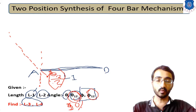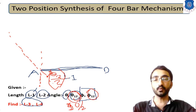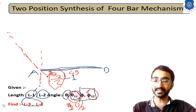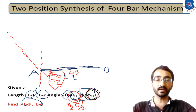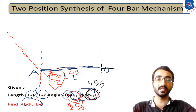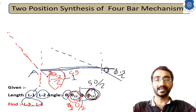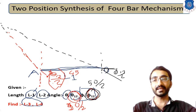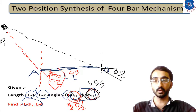Similarly, for the output link, phi-12 is given. From point D, draw another dashed line at angle phi-12 by 2 with respect to the horizontal baseline. The intersection of these two dashed lines gives us the pole point P-12 — the pole point for positions 1 and 2.